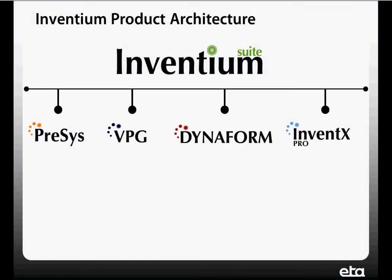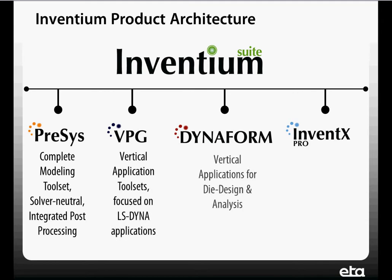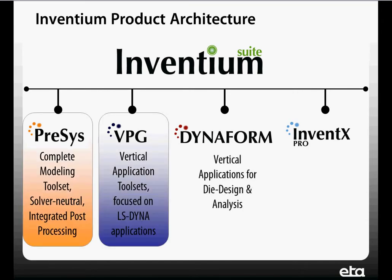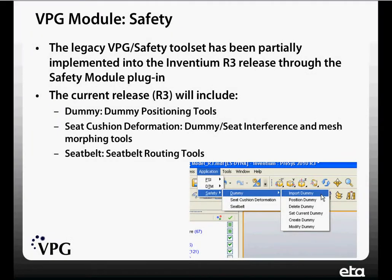The Inventium suite is ETA's enterprise-level software architecture. It includes PreSys and VPG currently. PreSys is our complete FE modeling toolset, intended to be solver-neutral with integrated post-processing and integrated CAD interfaces. VPG is our vertical application toolset focused on LS-Dyna applications. The VPG safety module is based off of our legacy VPG safety toolset, and we've implemented that through a plug-in in the Inventium product.